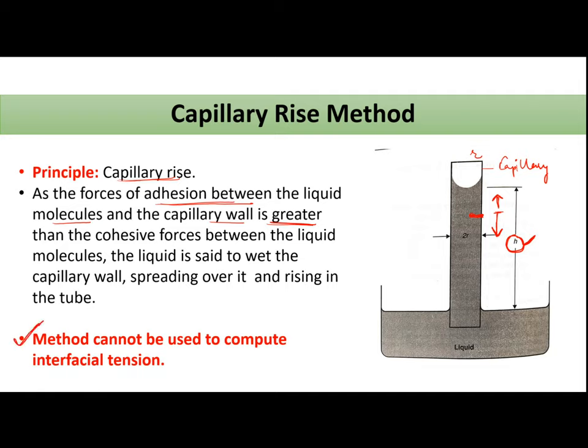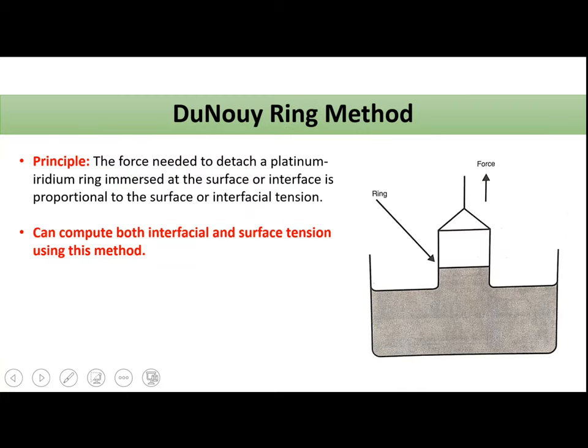There is one major disadvantage with capillary rise method. That is, this method cannot be used to compute interfacial tension. Interfacial tension maine pehle bhi aapko kaha tha interface between two phases hongi where one of the phases not your air. Toh interfacial tension aap nahi determine kar sakte using this method but you can determine surface tension, matlab aap wohi tension determine kar paoge jahan one of the phases your air. So this is your first method.